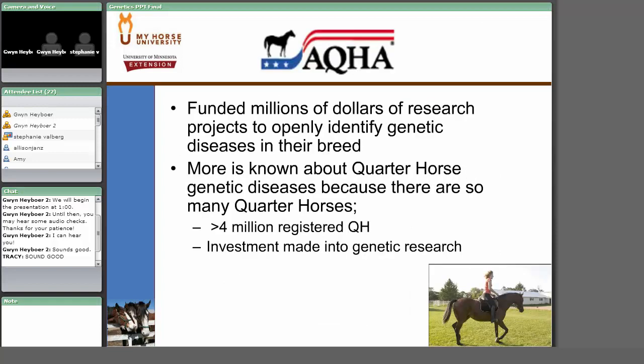I want to go through quarter horses because we know a lot about genetic diseases in this breed, giving a nice example of how to use available genetic tests. One reason we know the most about quarter horses is not because they have more genetic mutations, but because the Quarter Horse Association has been remarkably proactive in researching genetic diseases and providing funds for independent groups to identify mutations. Additionally, with over 4 million registered quarter horses, having such a large number makes disease discovery more likely.